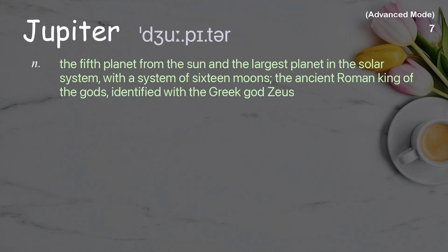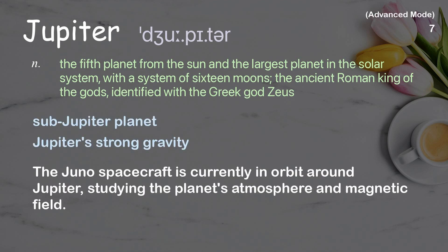Jupiter: The fifth planet from the sun and the largest planet in the solar system, with a system of 16 moons; also the ancient Roman king of the gods, identified with the Greek god Zeus. Examples: Sub-Jupiter planet. Jupiter's strong gravity. The Juno spacecraft is currently in orbit around Jupiter, studying the planet's atmosphere and magnetic field.